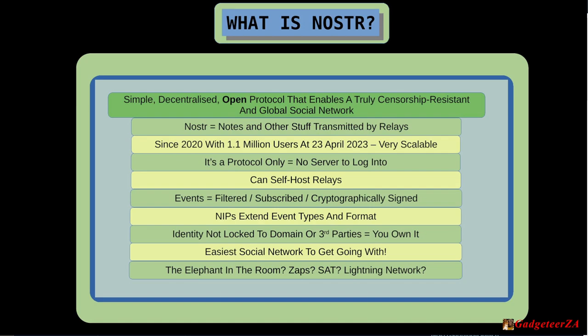Just as you can self-host a Mastodon server, you can also self-host a NOSTR relay. Everything on the NOSTR network is an 'event.' When you connect to a relay you can filter what you're receiving and subscribe to or follow certain people to get their posts. Every one of these events is also cryptographically signed, so you can be sure it's verified and coming from the person it indicates.